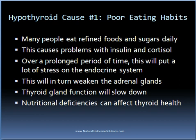For someone who has hypothyroidism, it is essential to minimize the amount of refined foods and sugars they eat and replace them with whole foods. While eating a completely organic diet isn't necessary, there are some foods that really shouldn't be eaten unless they are organic. For example, if you eat meat, it is best to buy organic meat and poultry to avoid xenoestrogens, as well as antibiotics and other toxins. Certain fruits and vegetables should also be purchased organic to avoid pesticides or herbicides. It is also important to drink plenty of purified water and avoid sugary soft drinks and fruit juices on a regular basis.